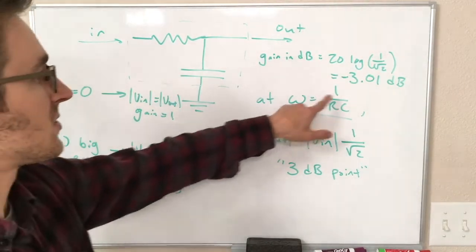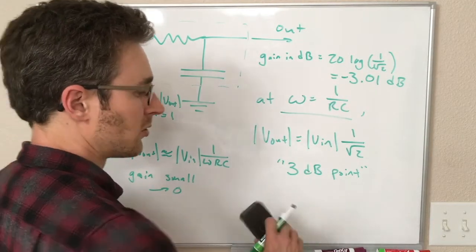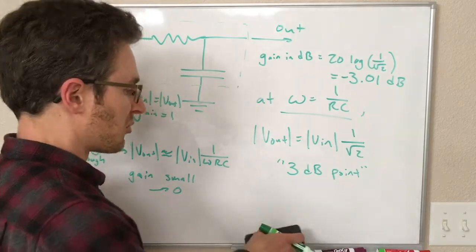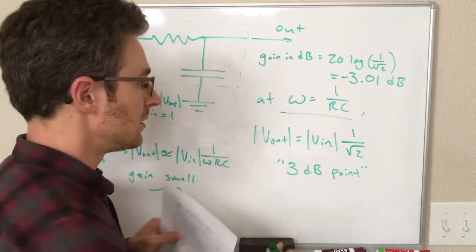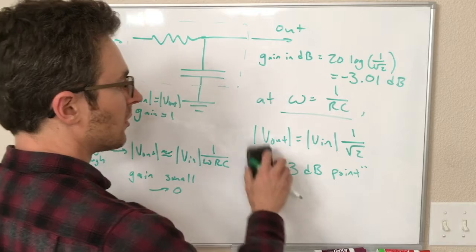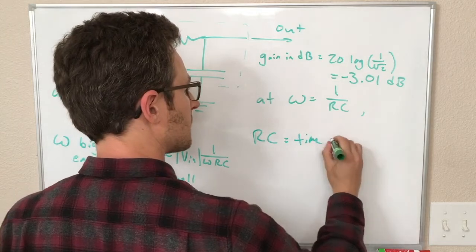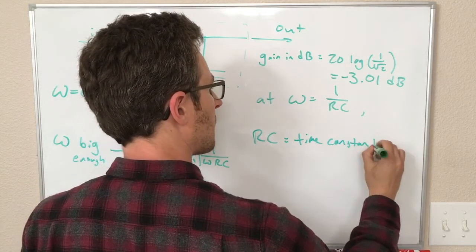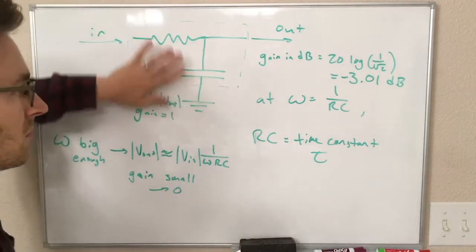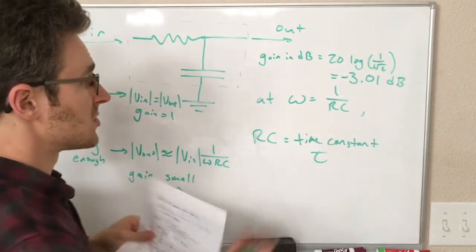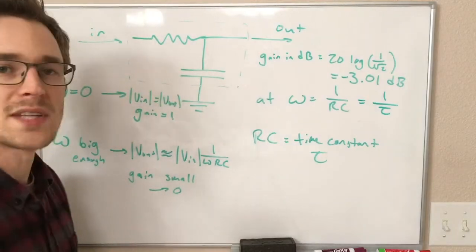That's an important characterization of this circuit. Note also that this transition frequency at 1 over RC, remember that for an RC circuit, when we learned about RC circuits in a previous class where we were learning about charging the capacitor and discharging the capacitor with a DC, turning on and off a DC signal, we learned that RC is the time constant, tau. That's some number of seconds that determines the timescale that this circuit changes its voltage over. Omega is also equal to 1 over tau as well.